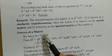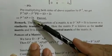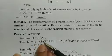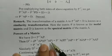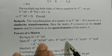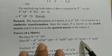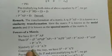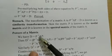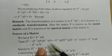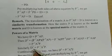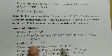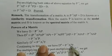Now, powers of a matrix. We have D = P inverse·A·P. Then D² = D·D = (P inverse·A·P)·(P inverse·A·P). By associative law of matrix multiplication, P·P inverse = I, so this gives P inverse·A²·P. So D² = P inverse·A²·P. Similarly D³ = P inverse·A³·P. Continuing in this way, Dⁿ = P inverse·Aⁿ·P.